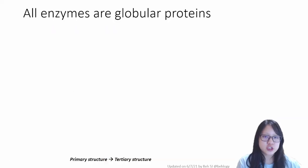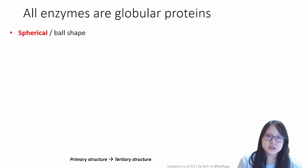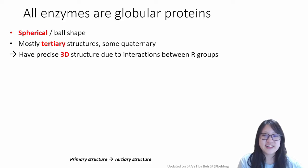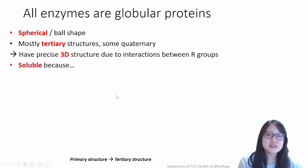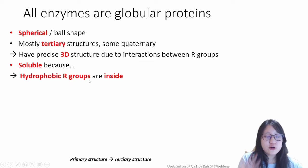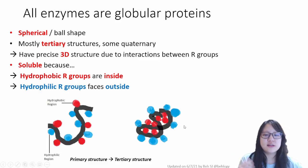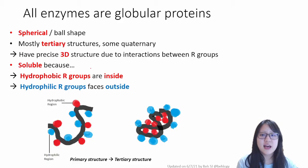Now back to structure. All enzymes are globular proteins. They are all spherical or ball shaped, mostly tertiary structures, some quaternary. This is a recap of the previous chapter. They all have precise 3D structure due to interactions between R groups of amino acids, and they are soluble because all hydrophobic R groups of the amino acids are facing inwards, and hydrophilic R groups are facing the outside, and it's usually illustrated in a diagram like this. These traits here apply to all globular proteins.